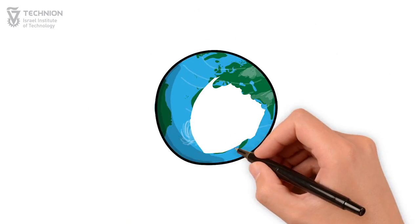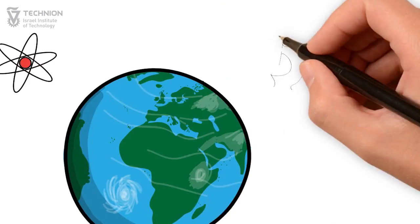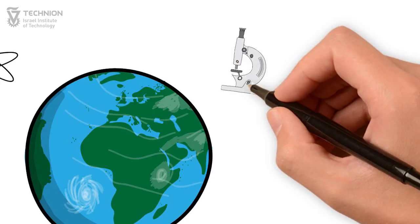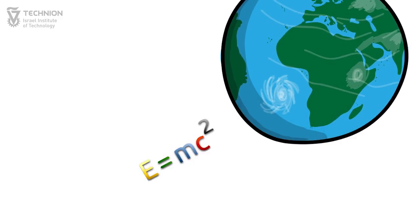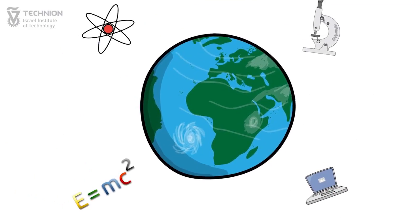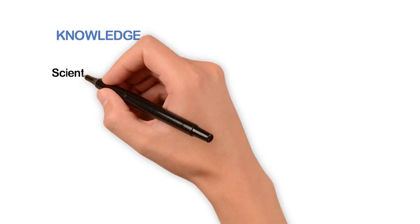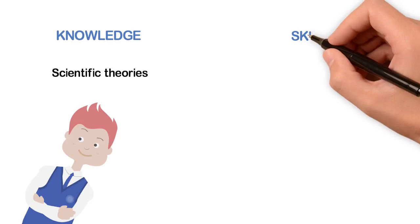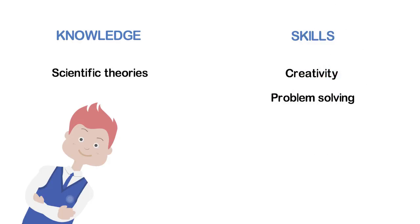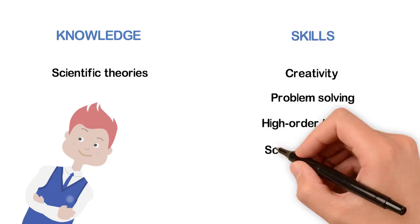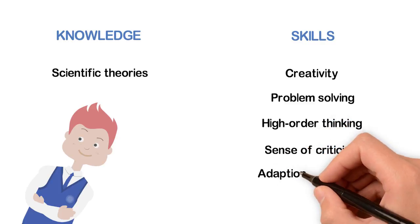The world of the 21st century is technological, scientific, and mathematical, marked by innumerable high-tech innovations and fast changes. In addition to knowledge and understanding of the scientific laws, David will also need to exercise and govern skills like creativity, problem-solving, high-order thinking, a sense of criticism, and adaption to changes.